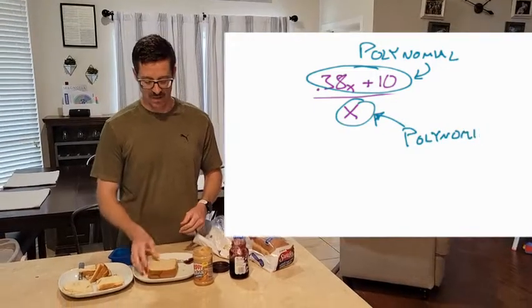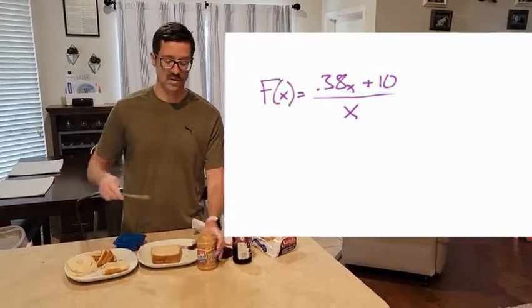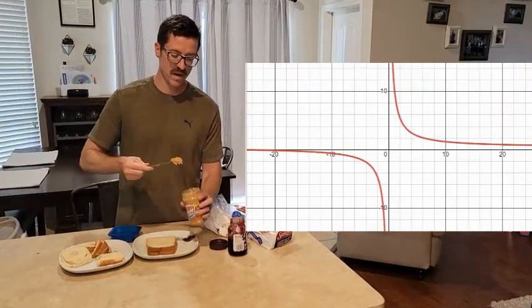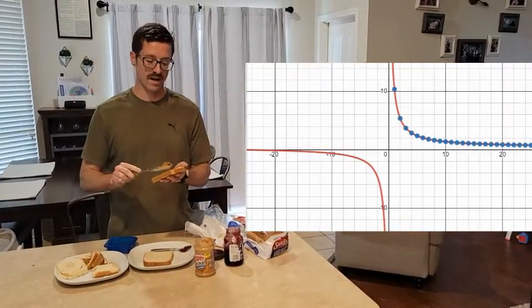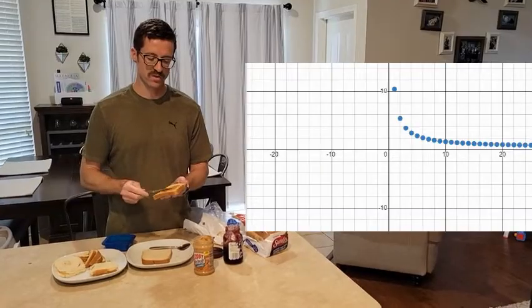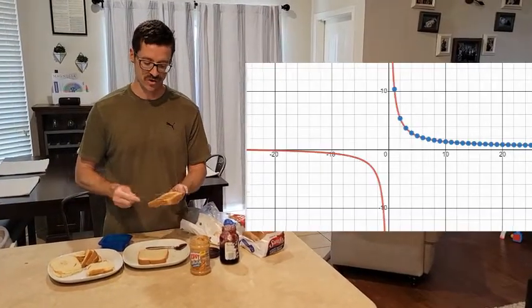Let's look at some of the attributes of our rational function. So technically our domain would be limited to the natural numbers because I'm not going to make a negative number of sandwiches, nor am I going to make a partial sandwich. But for the purpose of looking at the math, let's graph this without any domain restrictions.